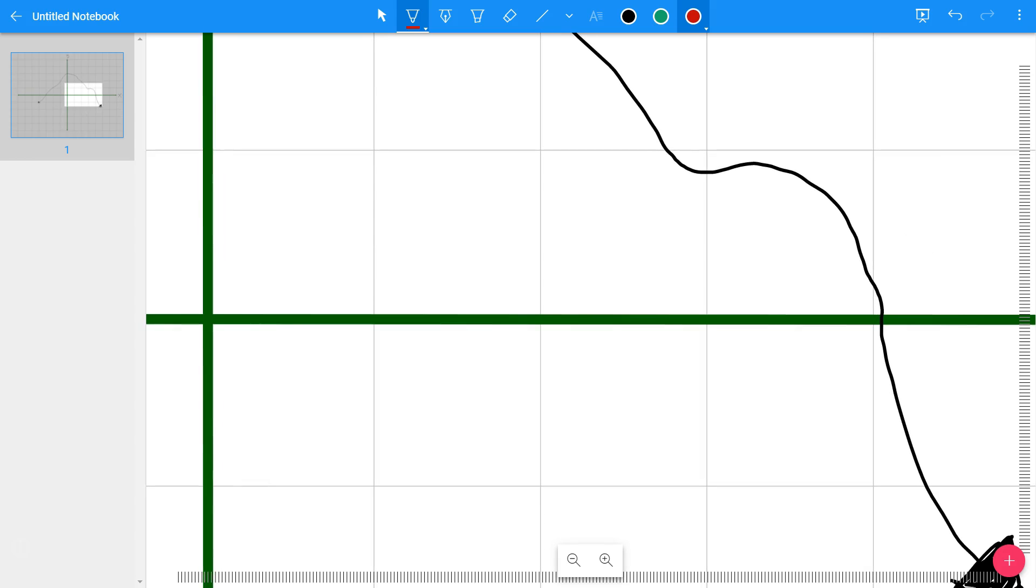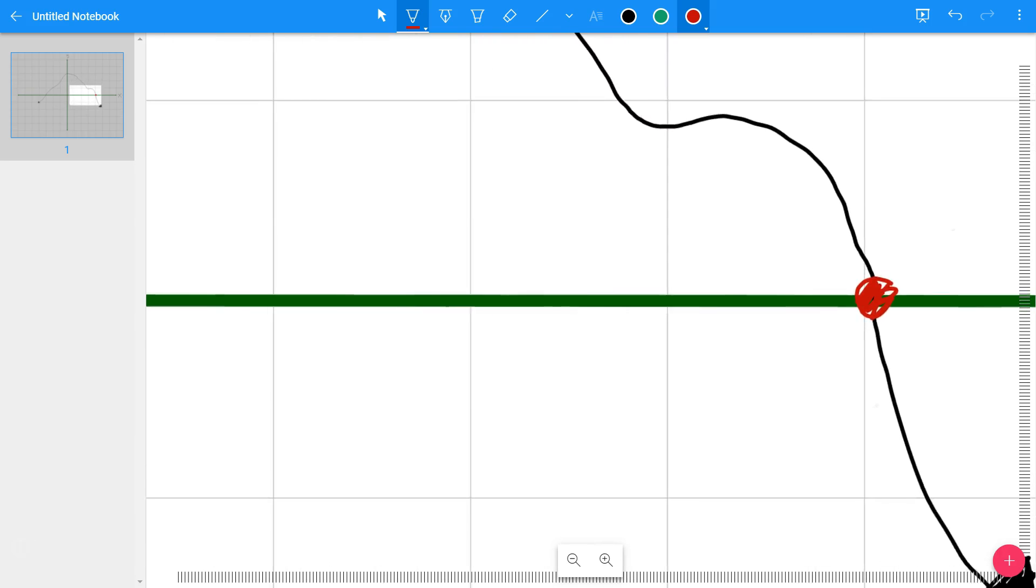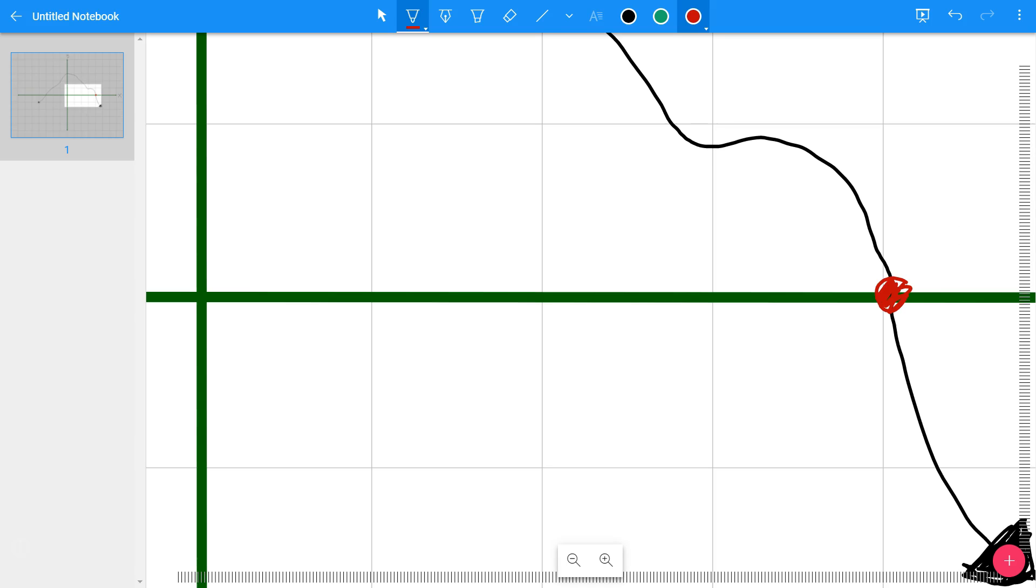So notice that this is a special spot right here. It's special because it's where the graph crosses the x-axis. So let's count this, count from the left side, from the green vertical line on the left side, that's the y-axis.